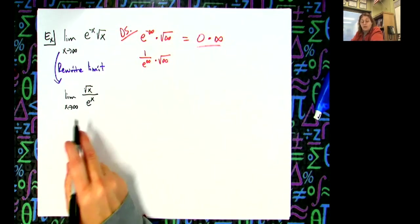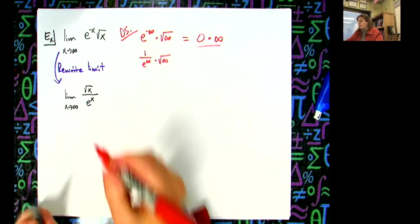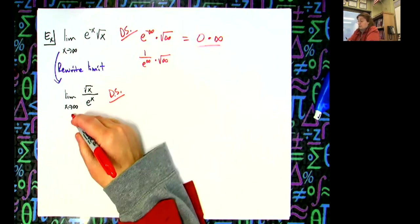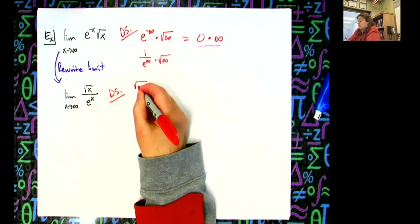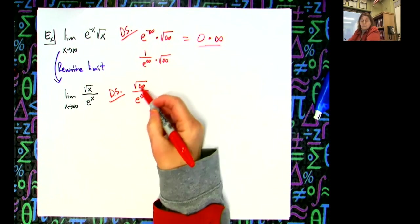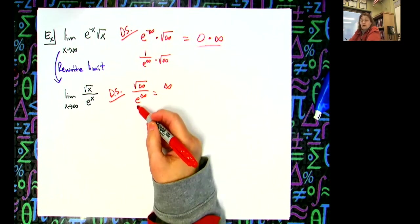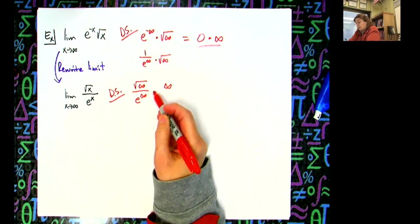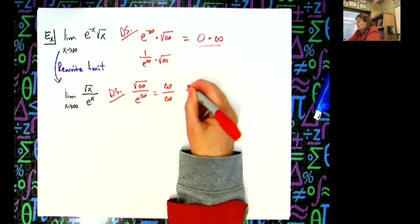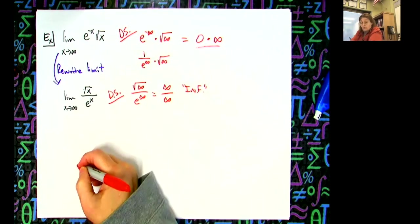Now if I get another indeterminate form, I'm going to be able to use L'Hôpital's rule. Let's do a direct substitution and see what happens. If I plug in, I get the square root of infinity over e to the infinity. The square root of a really big number is still a really big number, and a constant raised to a really big number approaches infinity. So now I have the indeterminate form ∞/∞, and I can use L'Hôpital's rule.